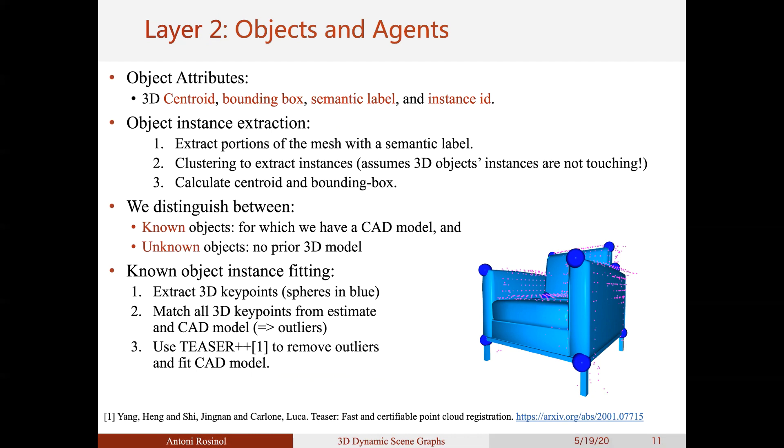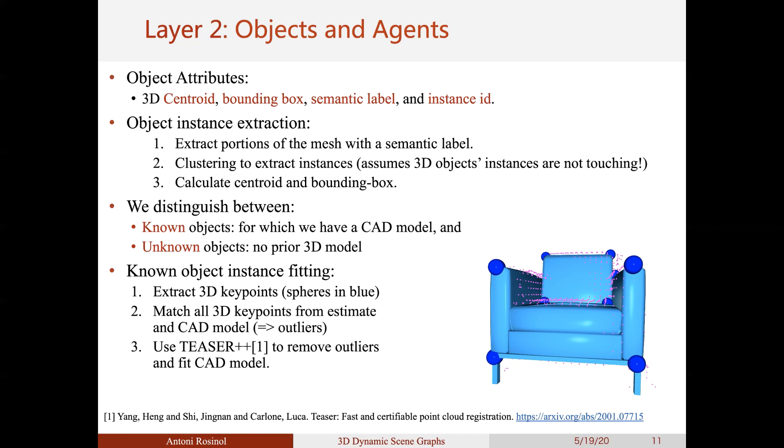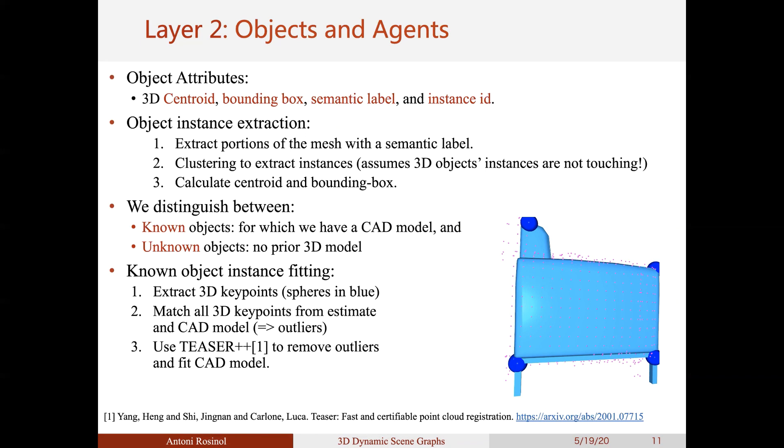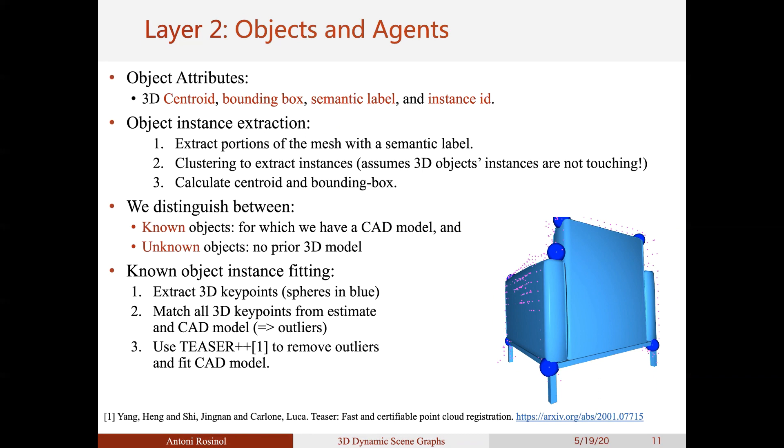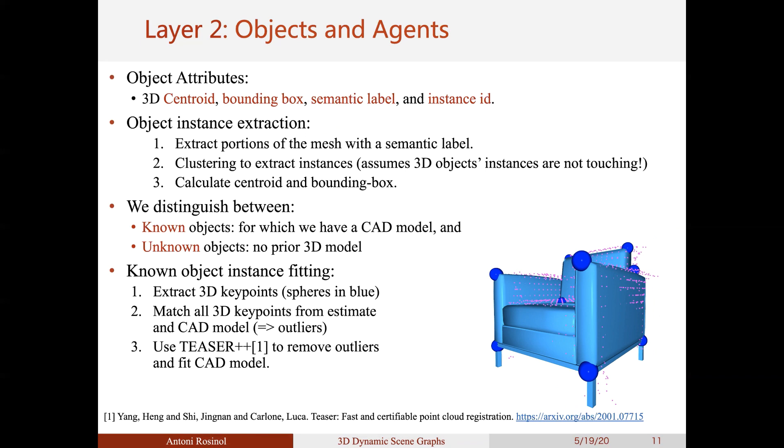We distinguish between two types of objects, known, for which we have a 3D CAD model in our database, and unknown, which has no prior 3D model. For the known objects, we fit its model by first extracting 3D keypoints between the estimated 3D mesh and the CAD model 3D mesh. We then match all 3D keypoints between the source and target models. Of course, this introduces a significant amount of outliers, but by using recent outlier-robust 3D registration techniques, we can faithfully register the 3D models.